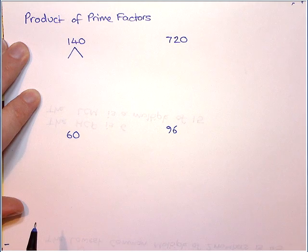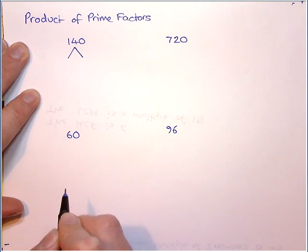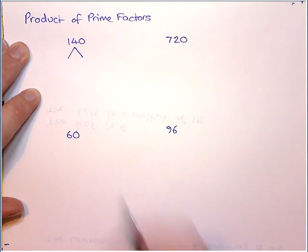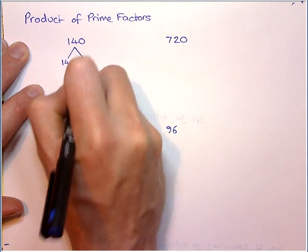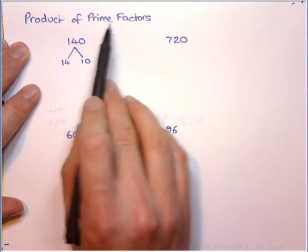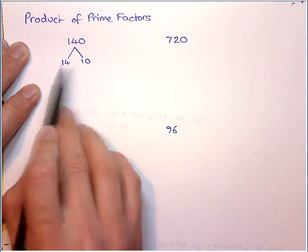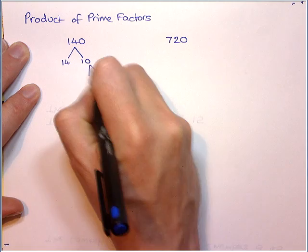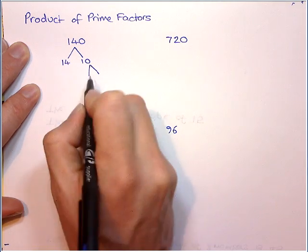So you can choose any two numbers at all here that multiply together to make 140. Now because it ends in a zero, I'm going to go for the obvious, 14 times 10. Now neither of these are what we call primes or prime factors, so we keep going until we just get prime factors.